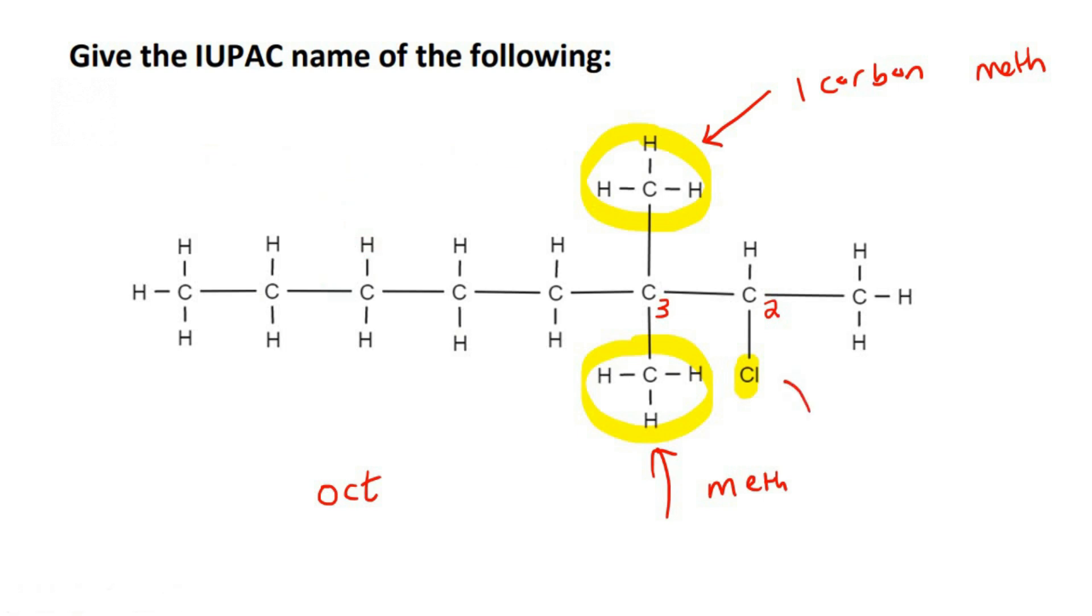Okay, and then this branch is chloro for chlorine. So we have to use the alphabet. So C always comes before M. So we'll start with chloro. Chloro is on carbon number 2, so we'll say 2-chloro.